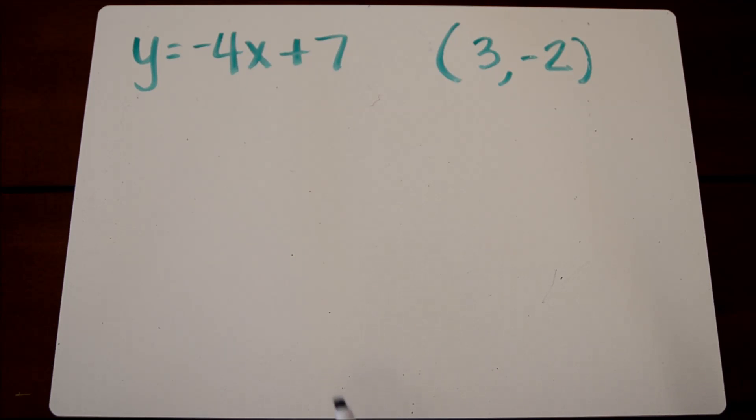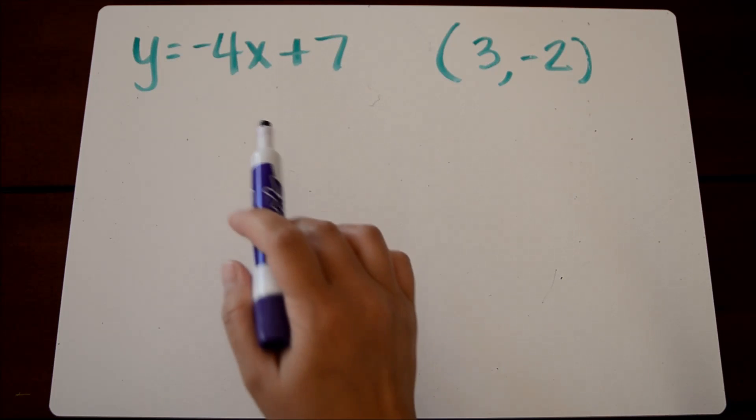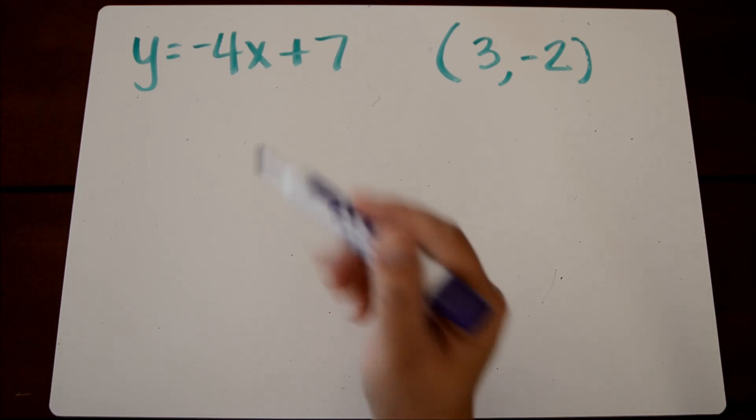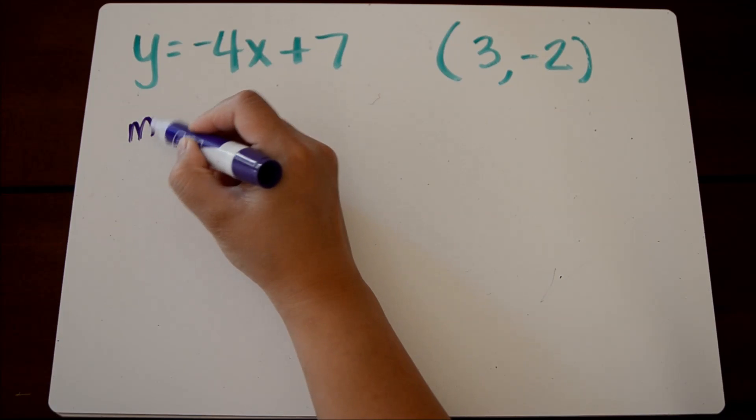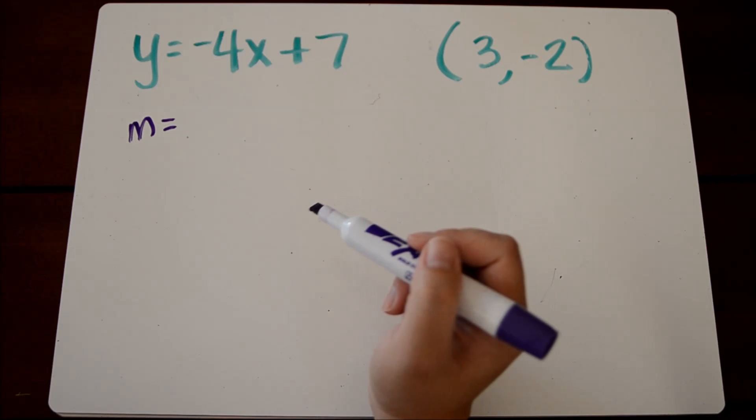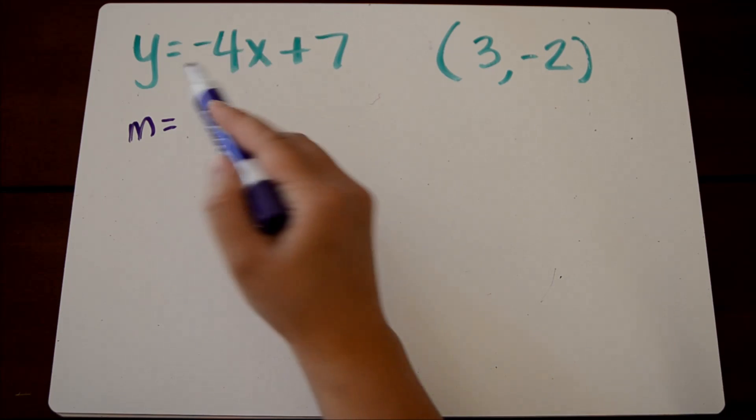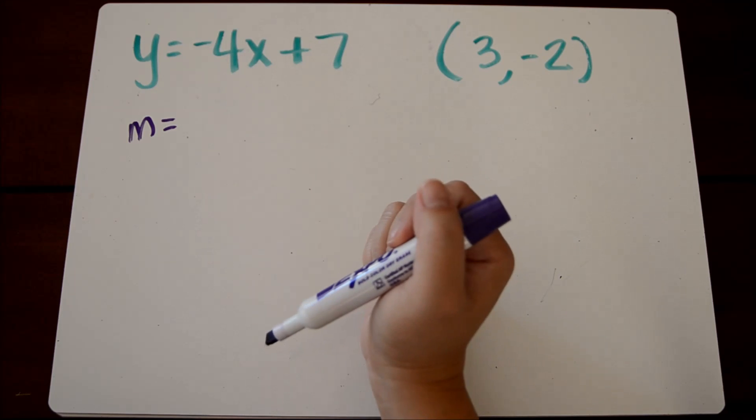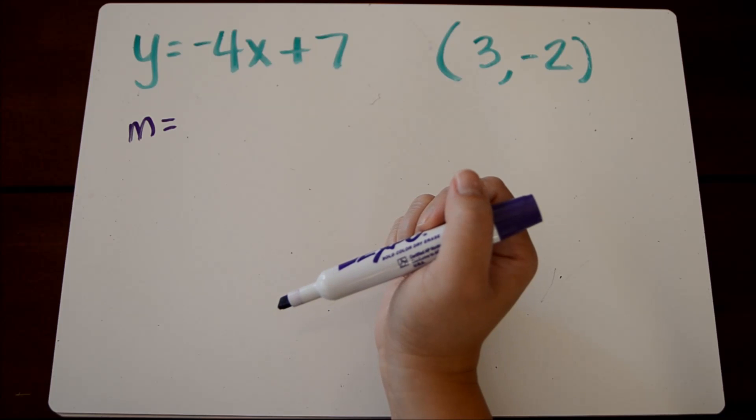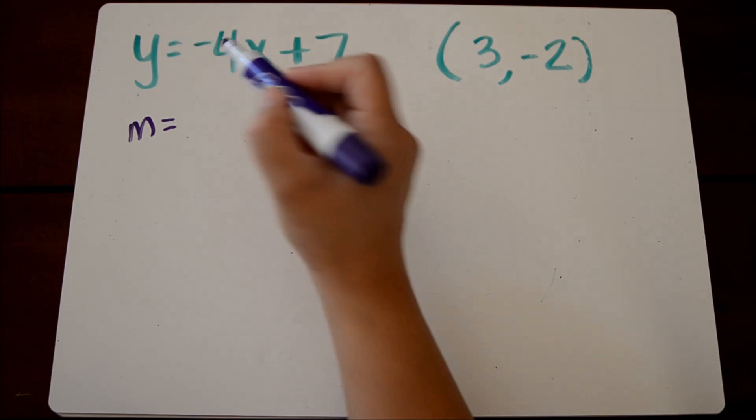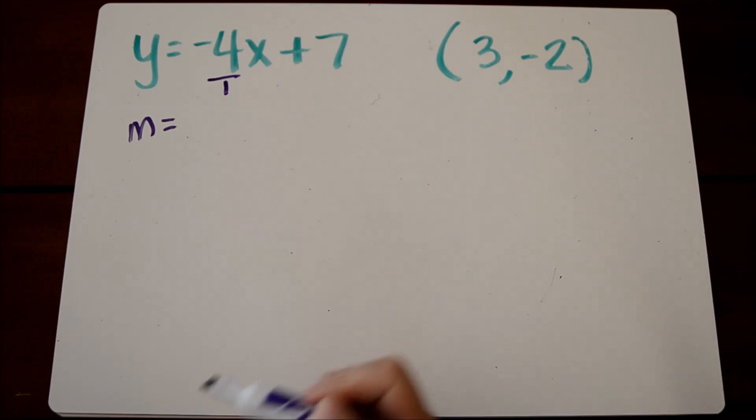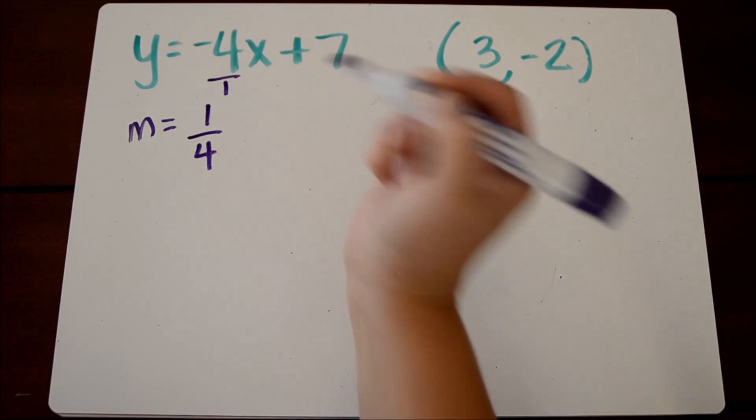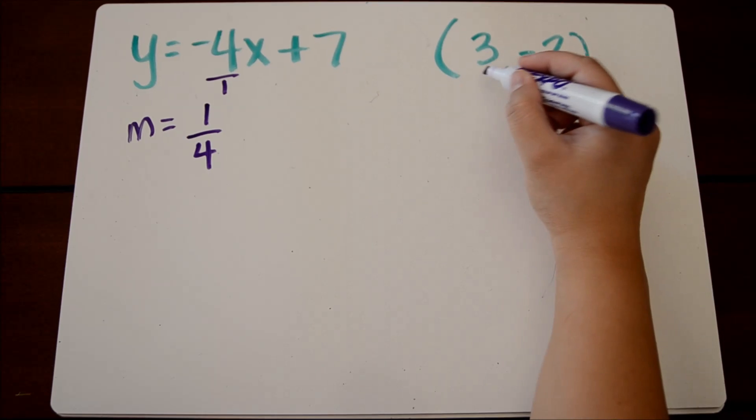Here's our second example. If we're given the equation y equals negative four x plus seven and we have to write an equation that goes through the point three negative two, the opposite reciprocal of negative four is a little tricky because a lot of people don't understand that negative four is a fraction. We just have to write it over one and then it becomes a fraction. Any number over one doesn't change in value. So the opposite of negative four will be positive one over four.